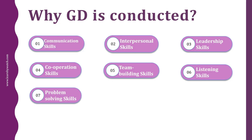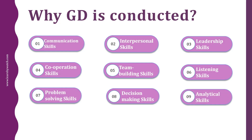Sixth is listening skills — to check if you are an active listener. Seventh is problem solving skills — to check how good you are at solving different problems. Eighth is decision making skills — to check whether you are good at decision making and how you put forward your views in front of the group. Ninth is analytical skills, also called logical skills — to check how you analyze the situation and speak relevantly, rather than blabbering without making any point, and try to conclude the discussion with important points.